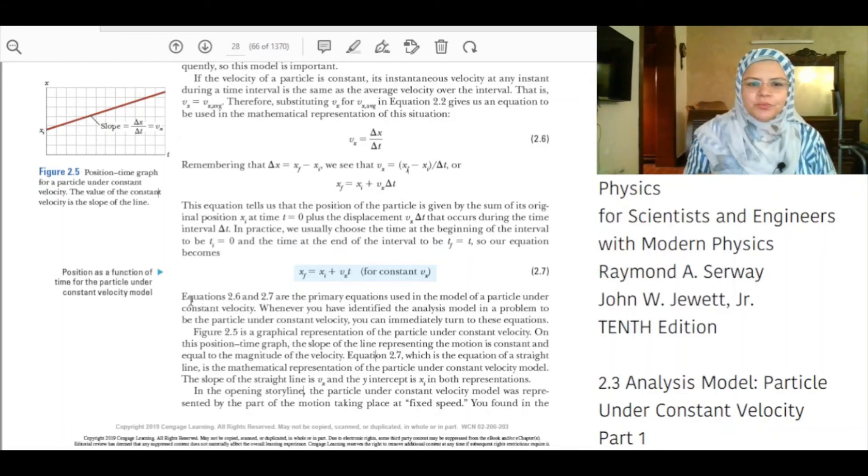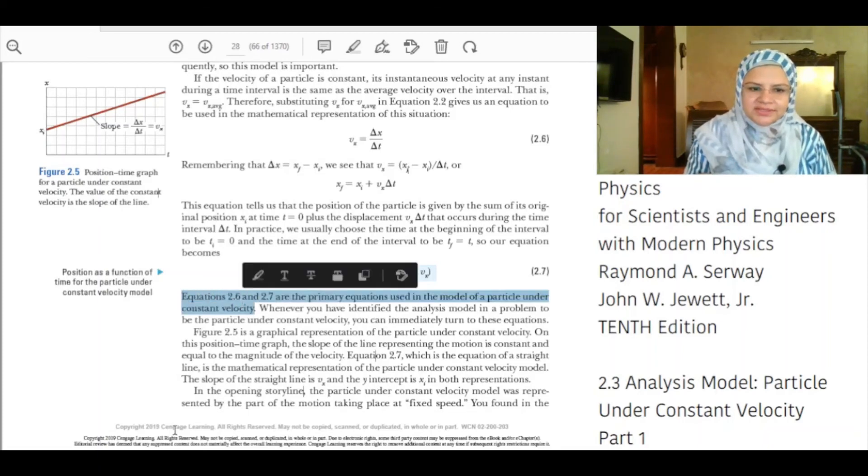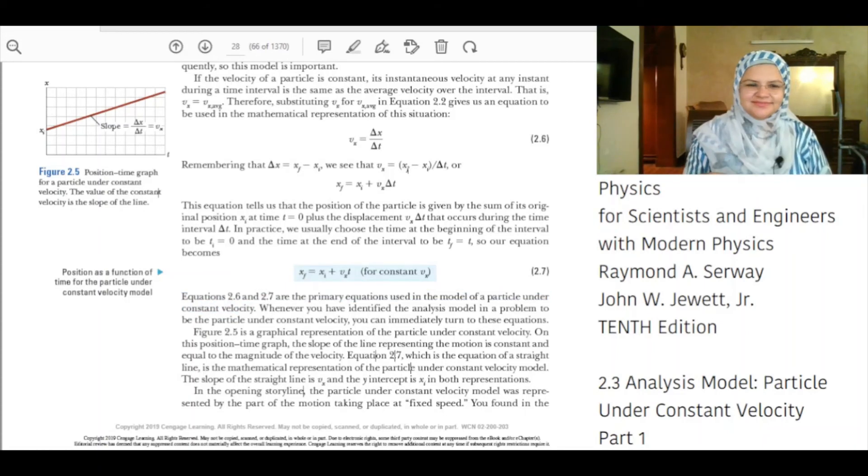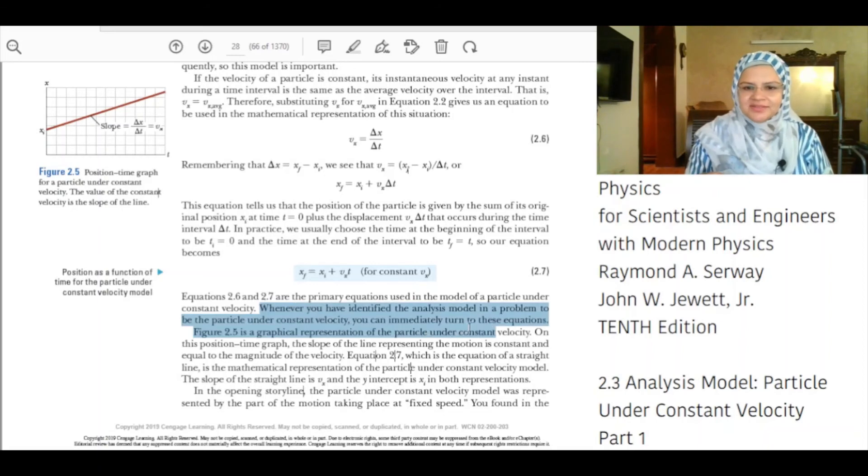Equations 2.6 and 2.7 are the primary equations used in the model of a particle under constant velocity. Whenever you have identified the analysis model in a problem to be a particle under constant velocity, you can immediately turn to these equations.